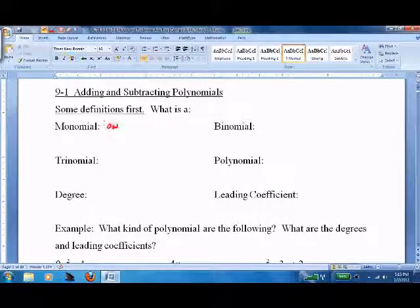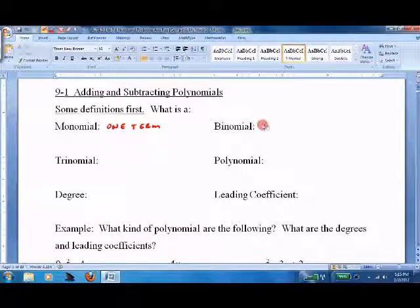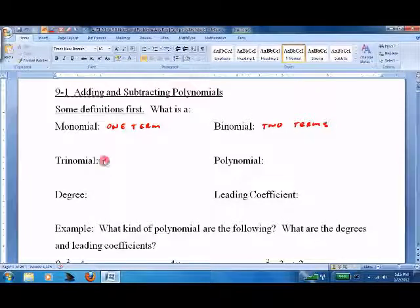That's one term. Binomial is two terms. Trinomial is three terms. So what do we mean by terms?